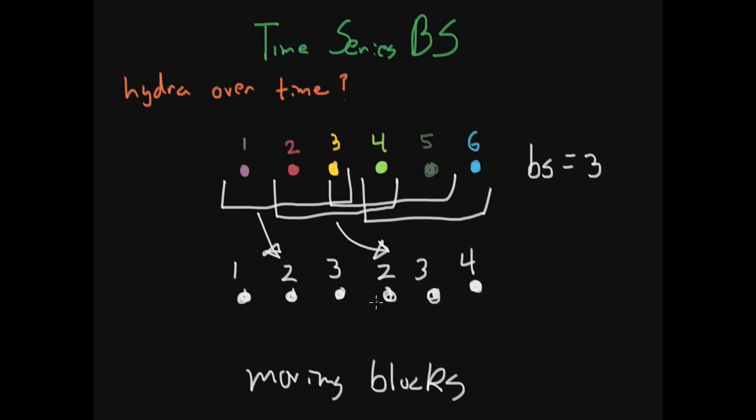So notice once again, we can get the same data point multiple times in our bootstrap samples, just like we did with replacement. But we also get the sequential nature. We get the two, three, four, and the one, two, three in the block size.